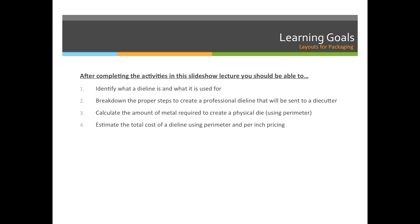Our objectives for today are: one, to identify what a die line is and what it is used for; two, to break down the proper steps to create a professional die line that will be sent to a die cutter. For those of you who take Art 1200, Art 1210, Art 2200, Packaging Design, or Advanced Design, you're going to see these steps over and over again.